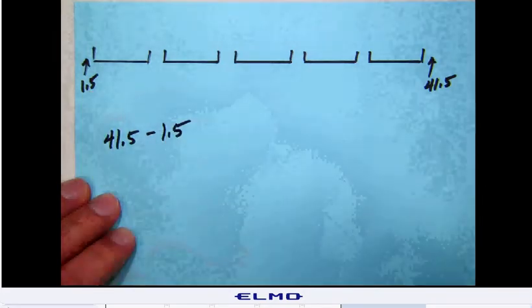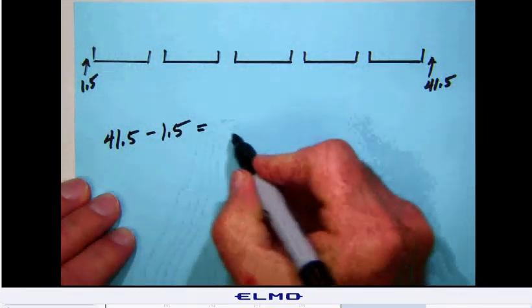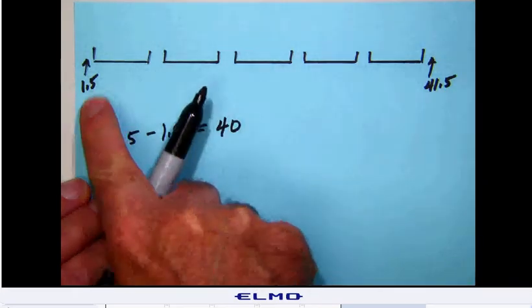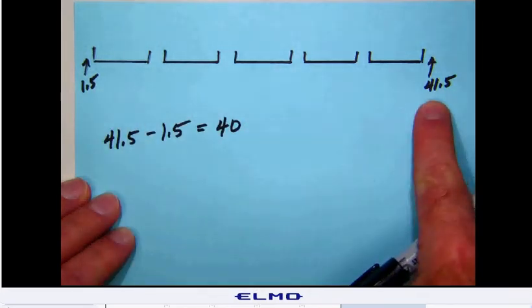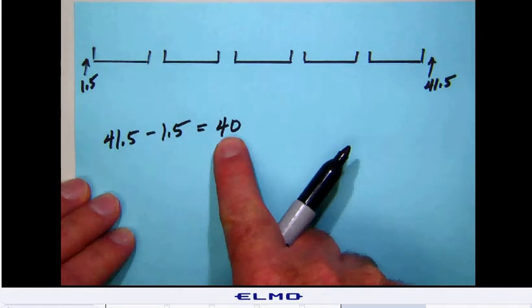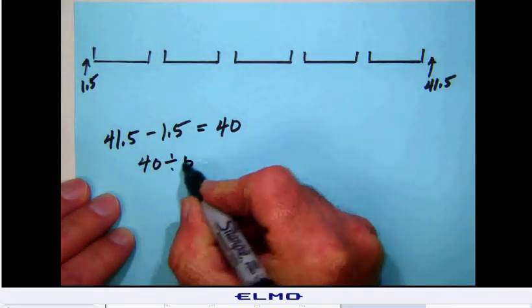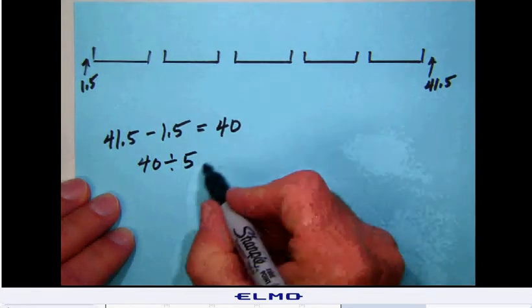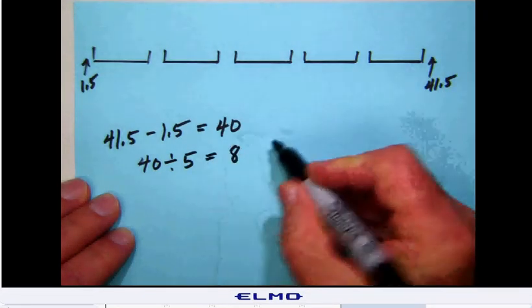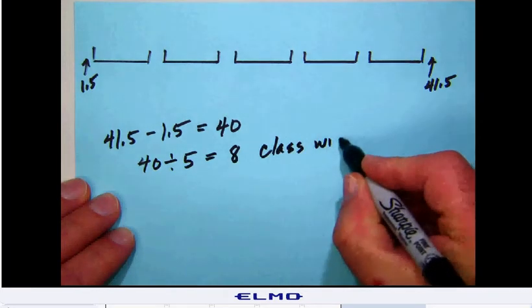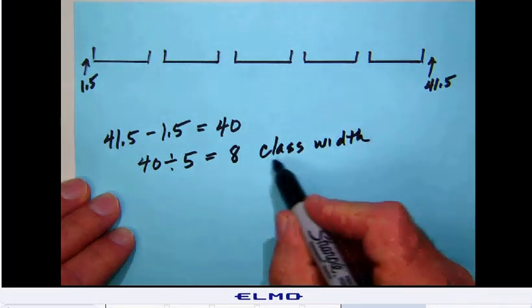And that this total distance then from here over to here is 40. But that 40 is going to be divided up among each of the five classes, so we are going to have a class width of 8.